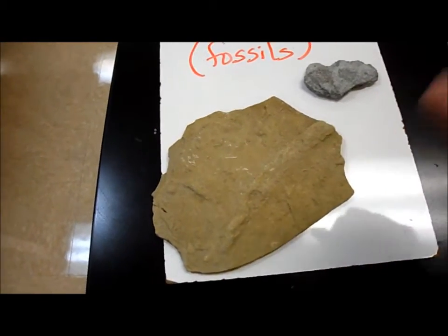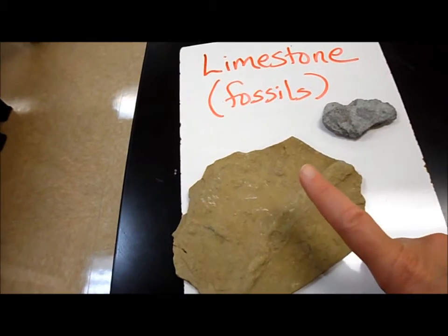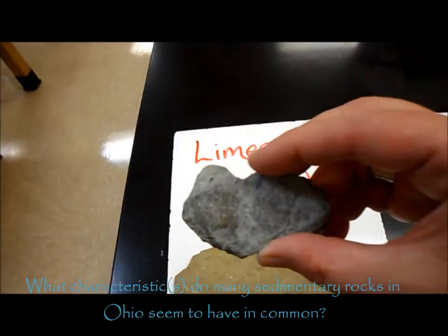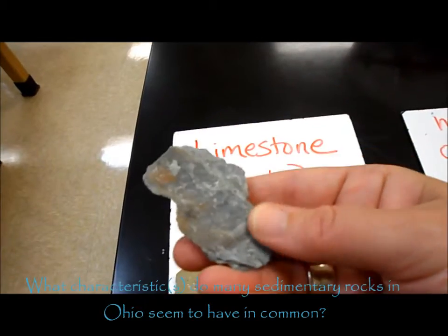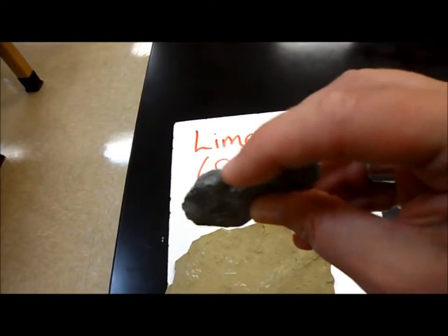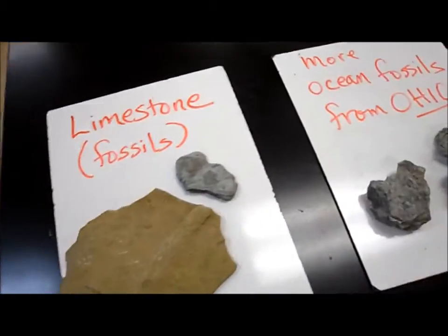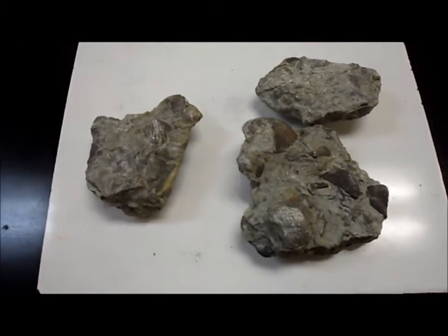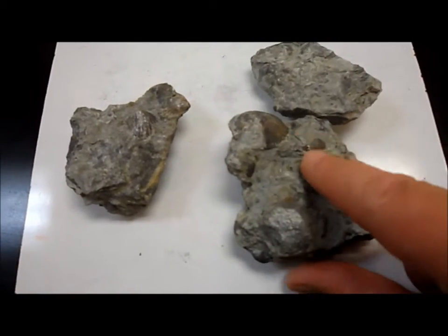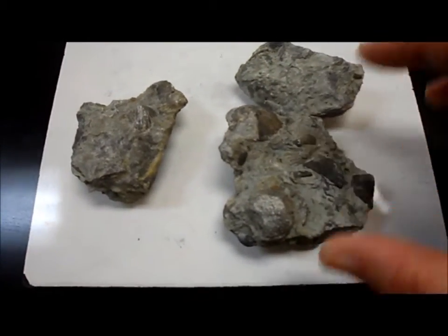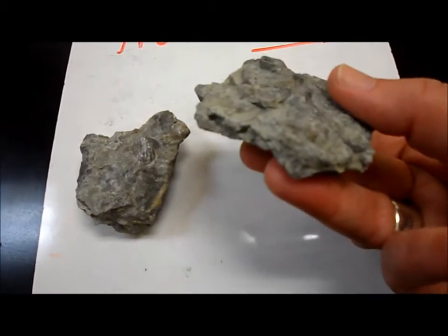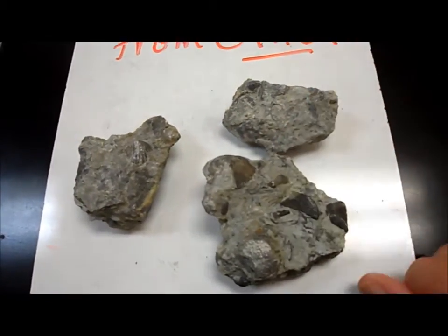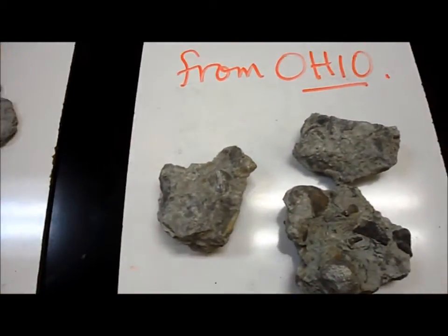I found this fossil in Ohio. So you want to think about why would you find a fossil with ocean creatures in it in Ohio. Here's another one where you can very clearly see the shells that are embedded, and again you can see the layers along the side. Here are some more limestone fossils that I found in Ohio, and if I get up close you can see that there are shells embedded almost like concrete. Sometimes this is referred to as a concretion because you have these fossils that are cemented together with the sediments from the bottom of the ocean. So these are all sedimentary rocks.